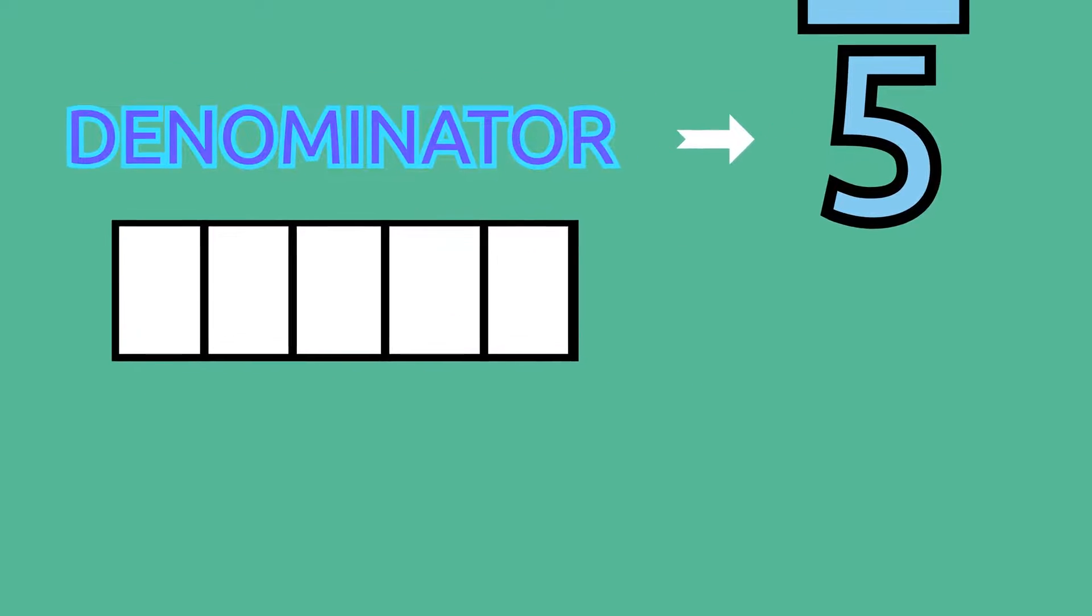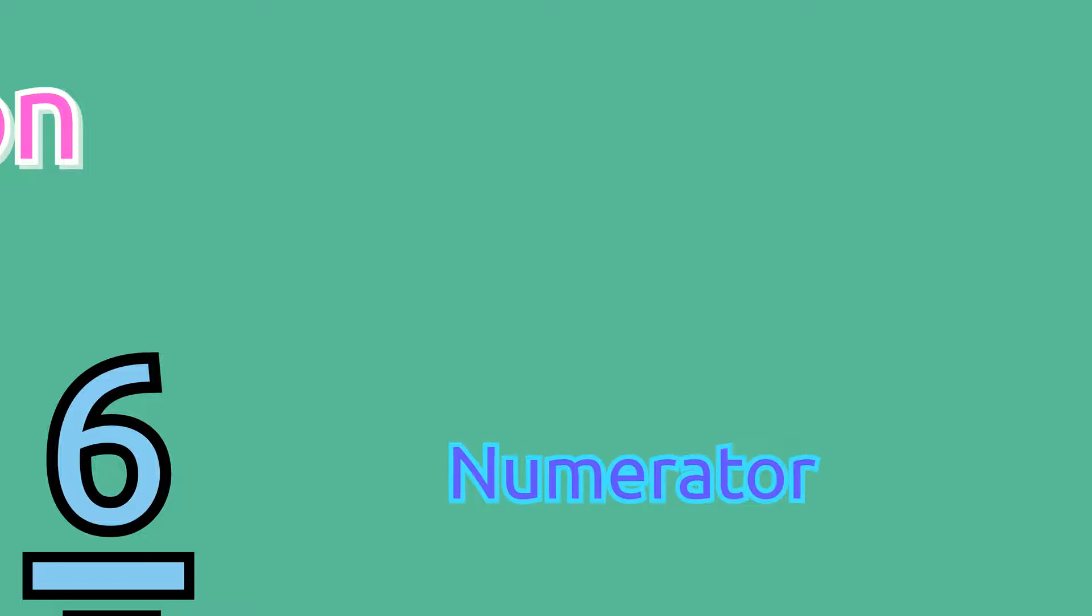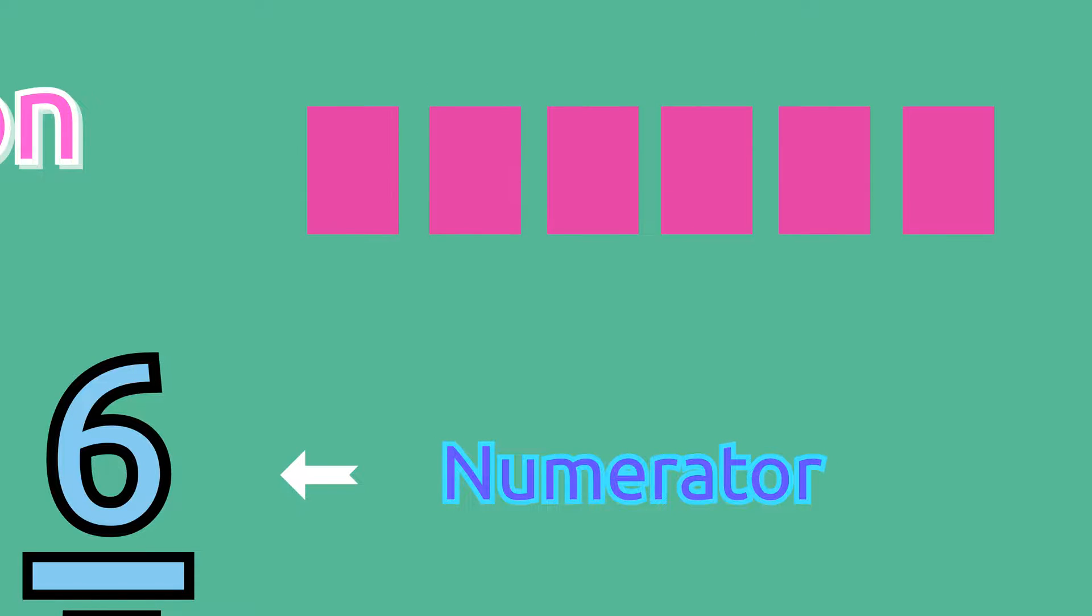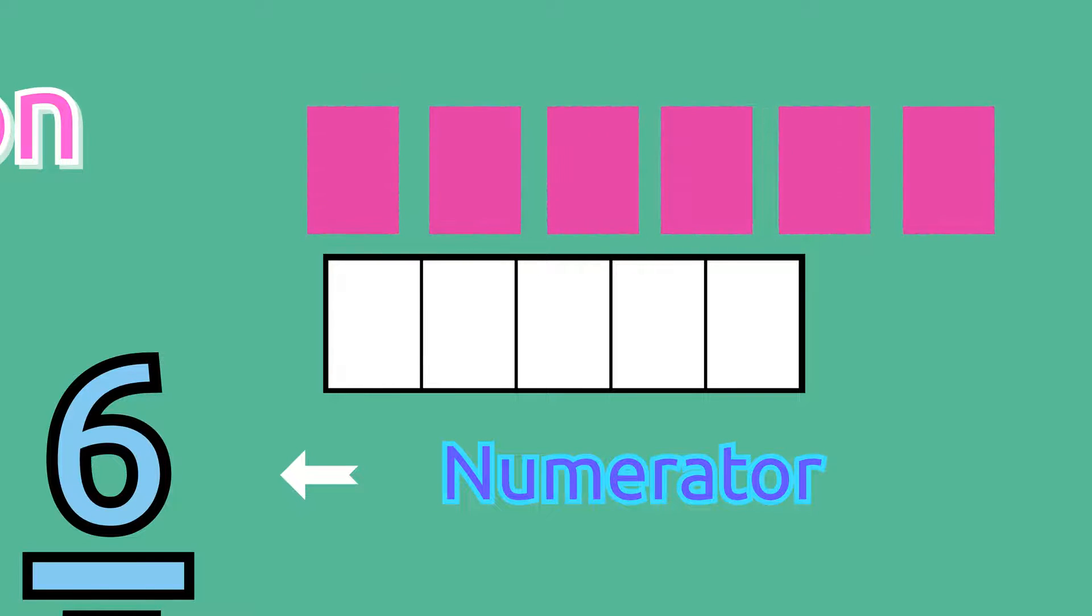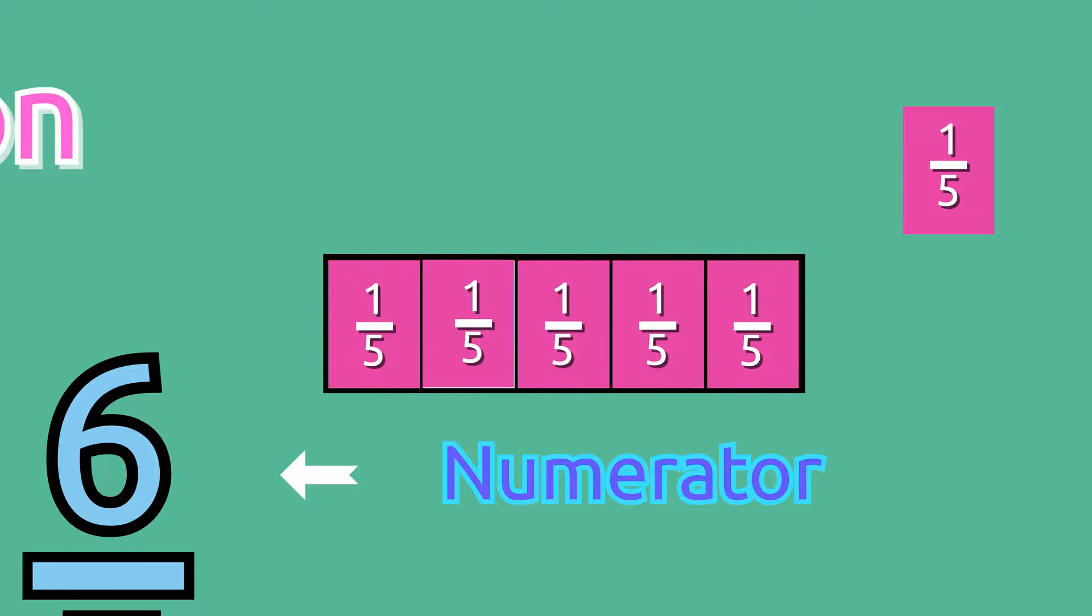However, if we look at our numerator, we will notice that we have more fractional parts than are needed to complete one whole. We only need 5 fifths or 5 fractional parts to complete one whole.